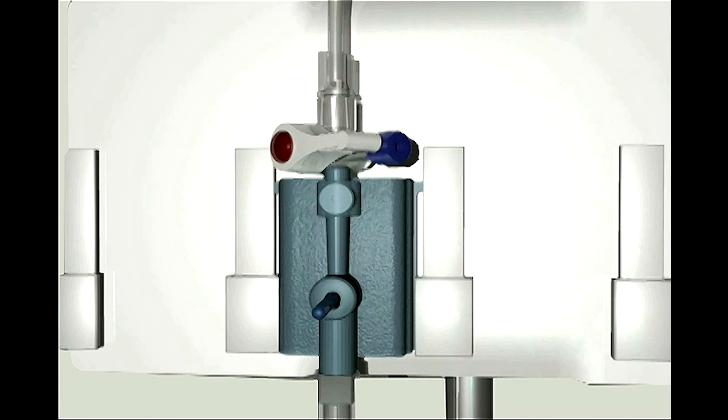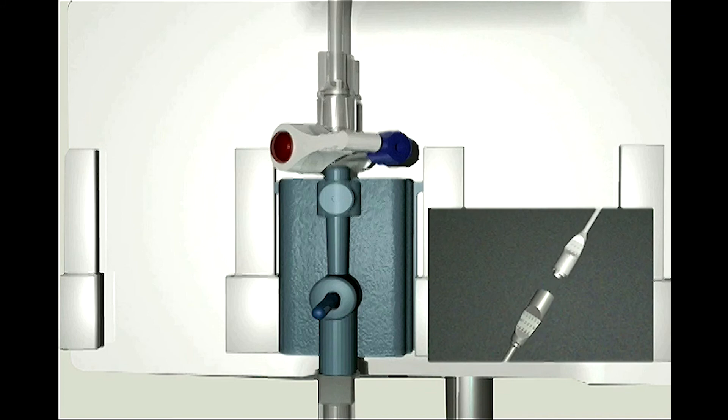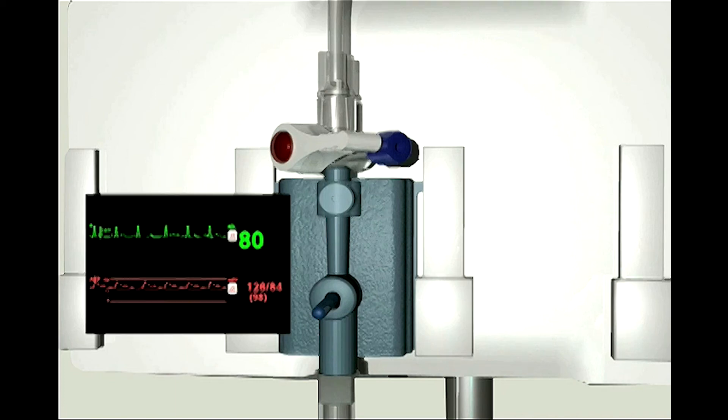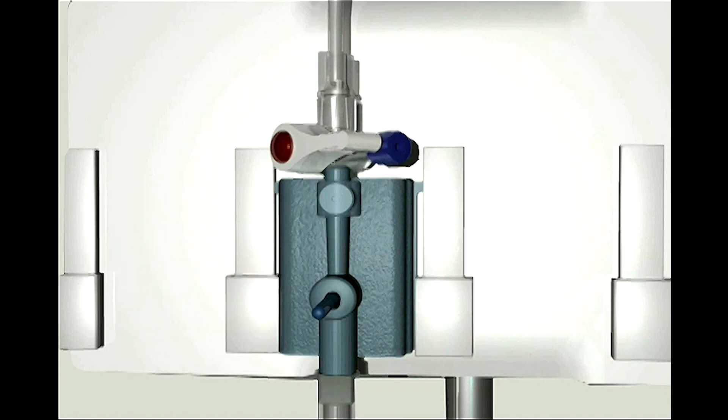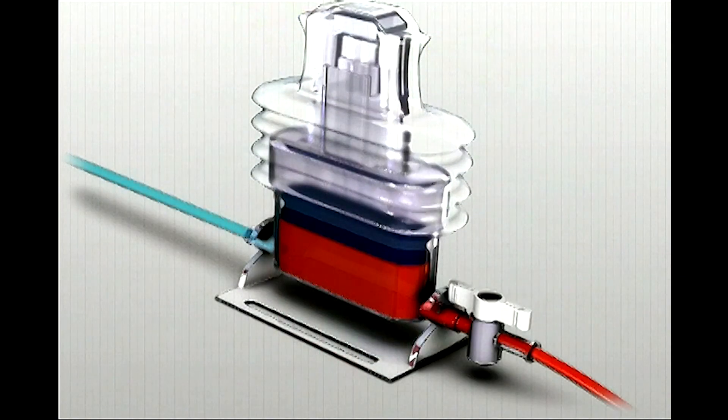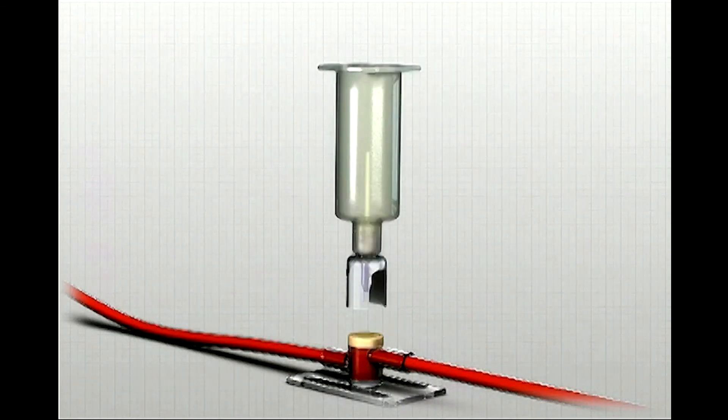The TruWave disposable pressure transducer is designed with the clinician in mind. From its ergonomic profile that fits in the palm of your hand to its cable connector that attaches and disconnects easily, the TruWave disposable pressure transducer provides high waveform accuracy and product reliability through a host of advanced design features. The TruWave disposable transducers can also be paired with VAMP kits for a complete and reliable closed needleless blood sampling system with accurate pressure readings in one complimentary unit.